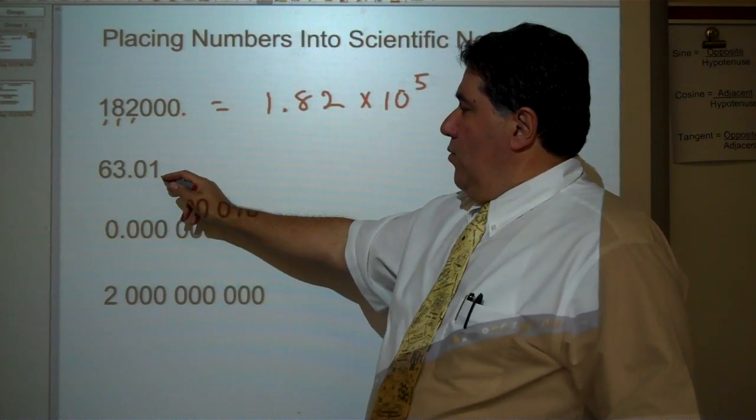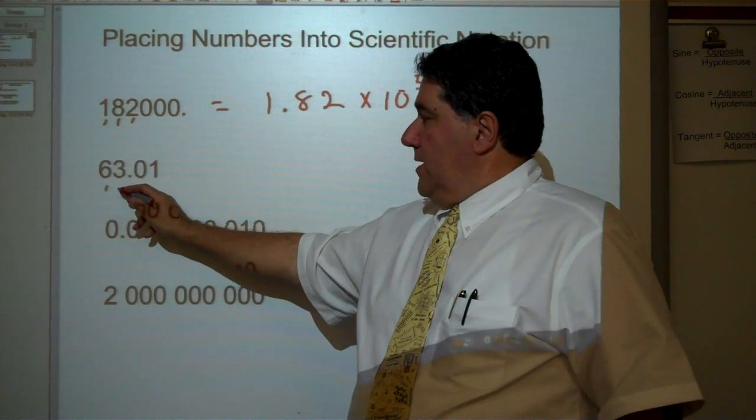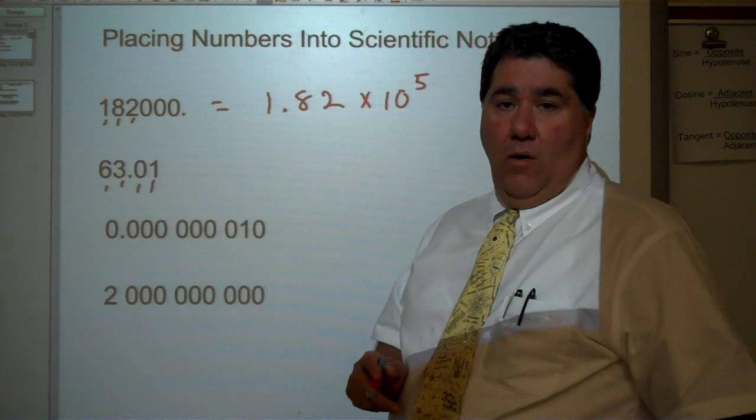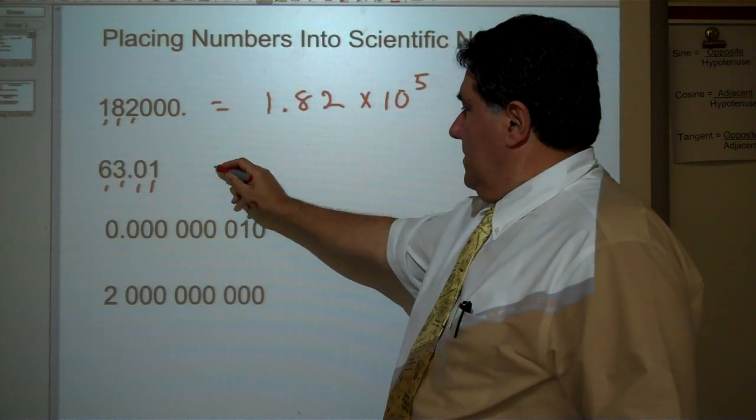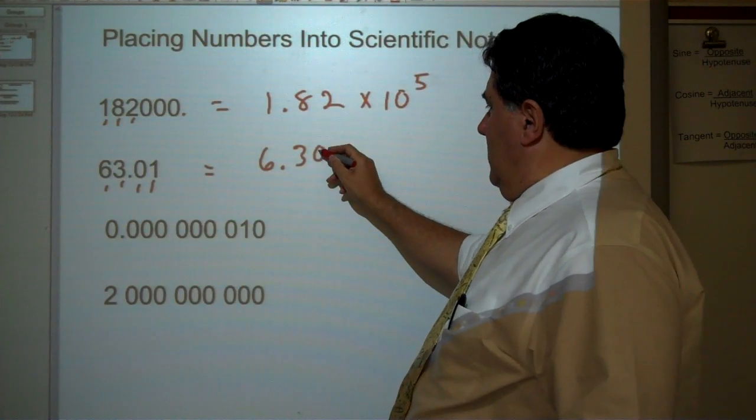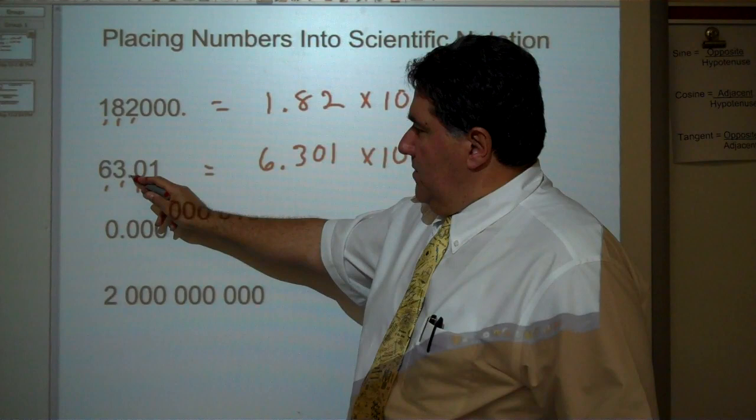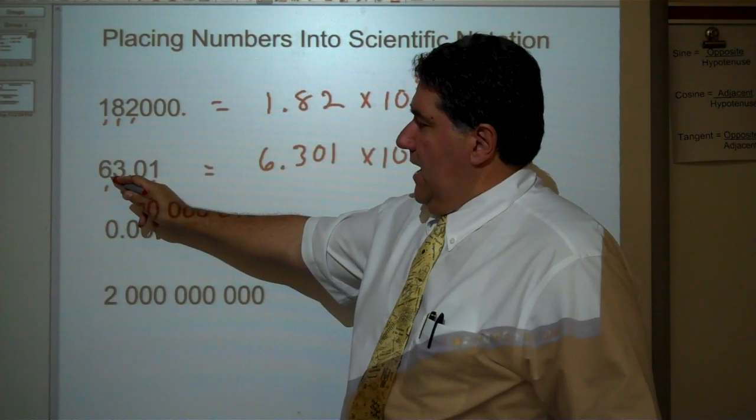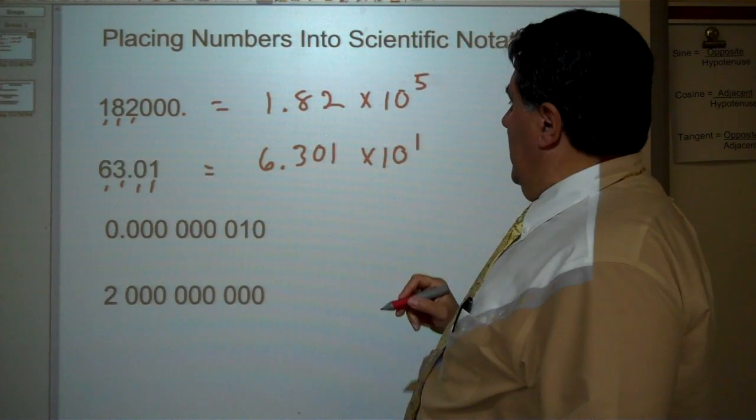63.01. How many significant figures are there? There's 1, 2, 3, 4. All four digits are significant. So the answer will be 6.301 times 10. And how many digits do we have to move this to get it after the first digit? It's 1 decimal place, times 10 to the first.